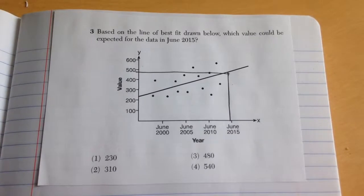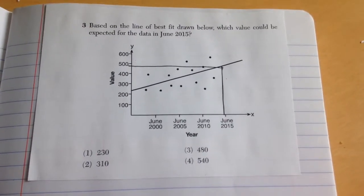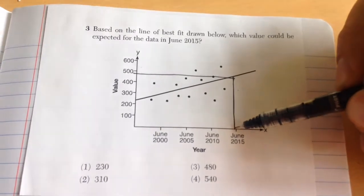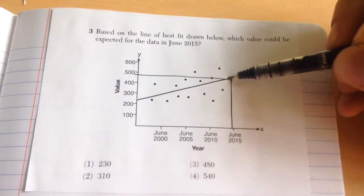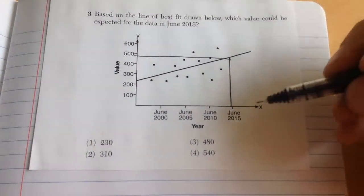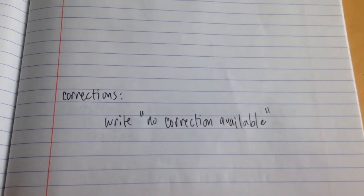Number 3, based on the line of best fit drawn below, which value could be expected for data in June 2015? So for June 2015, I go up all the way up to the line and over, noticing that it falls below 500. Choice number 3. For corrections, write no correction available.